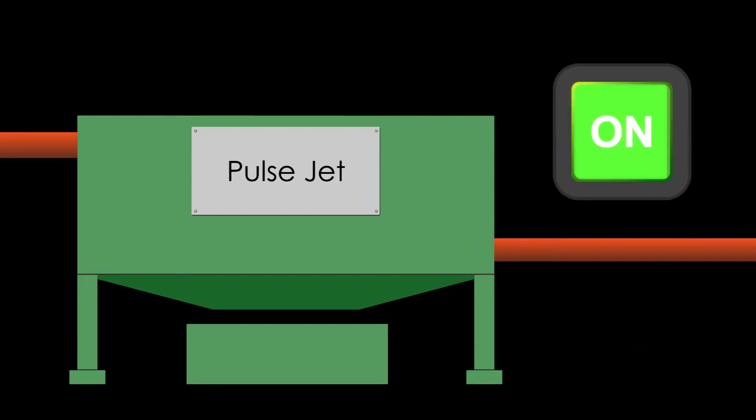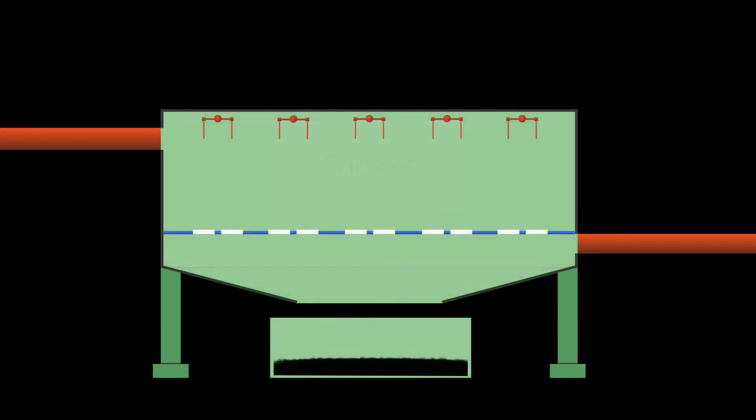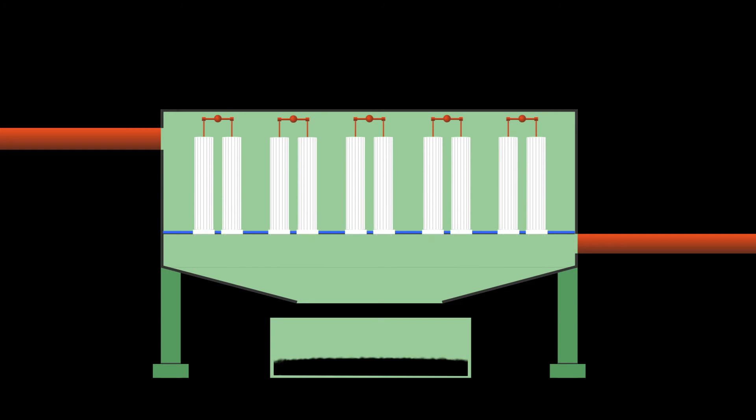Let's now consider shaker baghouse. A shaker baghouse, as the name suggests, mechanically disposes of collected dust by shaking it out of the bags into collection hopper at the bottom of the baghouse. In a shaker baghouse, filter bags are hung and tensioned from the top of the filter housing and attached to the base.